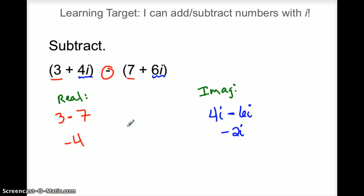So as a final answer, a single complex number, the real part comes first, negative 4. And again, in my imaginary, because I got a negative, it's going to be minus 2i. All right, this isn't too bad, right? We can handle this.